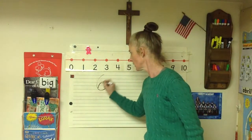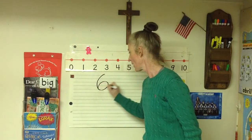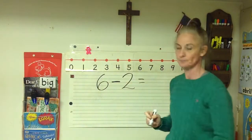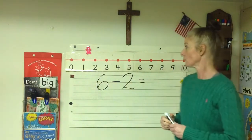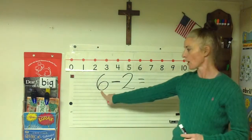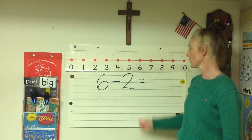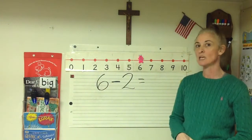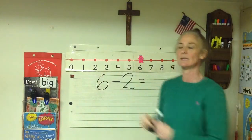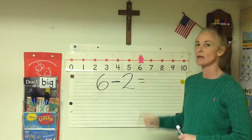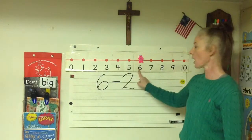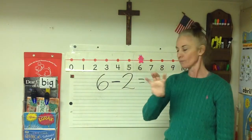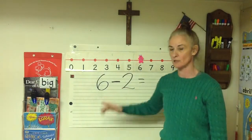We're going to write six minus two equals. Now just like when we did addition, we start on that first number, so we're going to start on the six. This is where it's different than addition, because when you subtract, you go back — easy to remember because they sound alike. So we're going to subtract and go back. Let me get some manipulatives to show you how they correspond to each other.